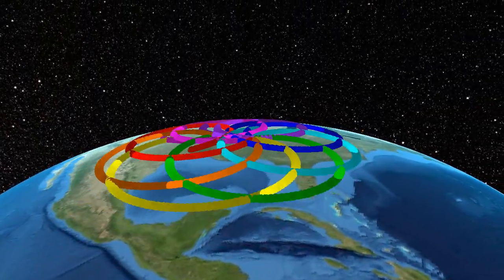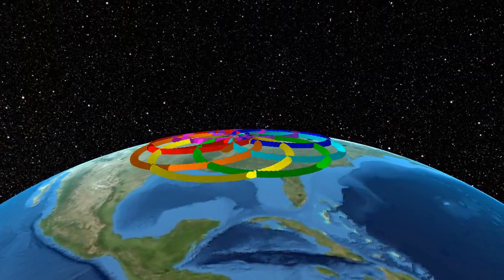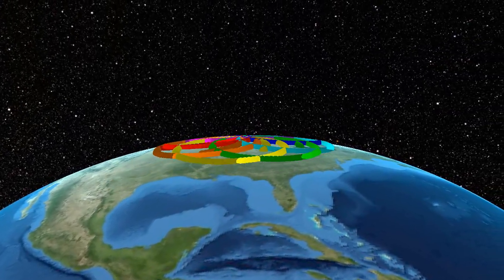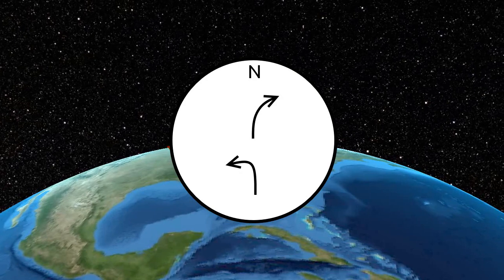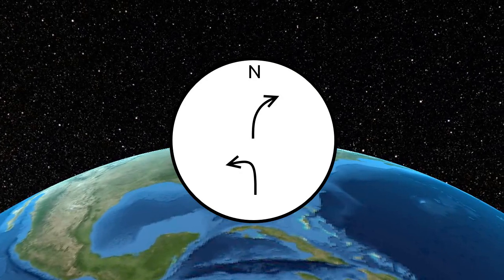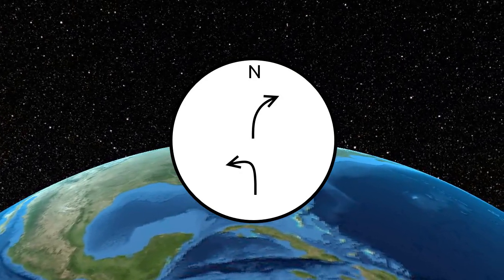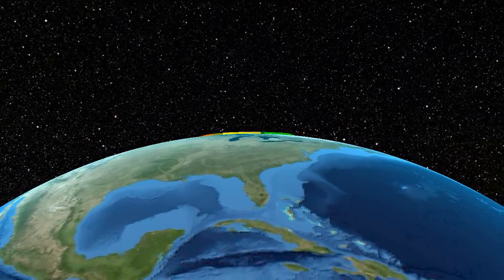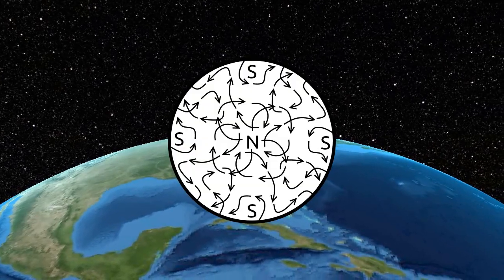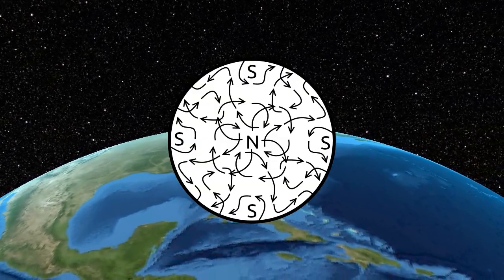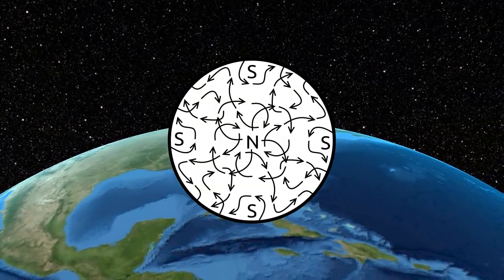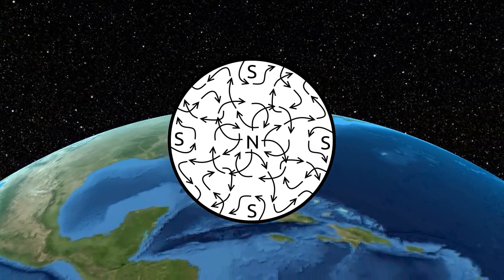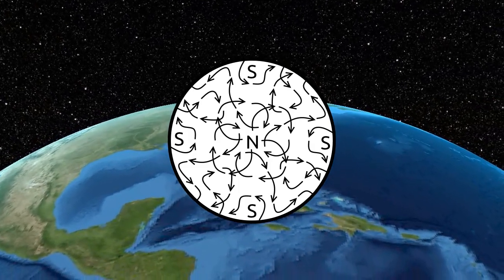However, whenever I try to find visualizations of the Coriolis effect, they always end up being either oversimplified to the point where they don't really convey anything beyond that simple explanation I said earlier, or they're too complicated, taking into account other factors unrelated to the Coriolis effect, which makes it very difficult to see exactly what the Coriolis effect is doing.